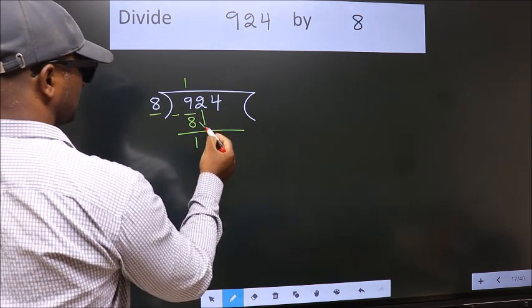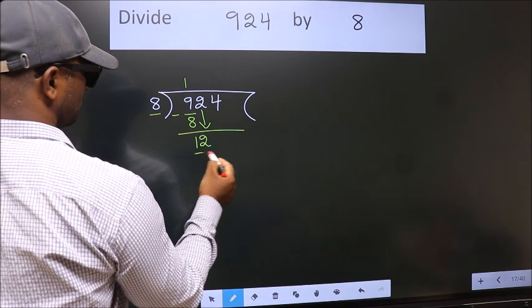After this, bring down the beside number. So, 2 down. So, 12.